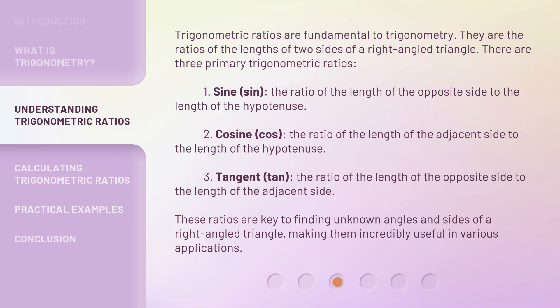1. Sine (sin): the ratio of the length of the opposite side to the length of the hypotenuse. 2. Cosine (cos): the ratio of the length of the adjacent side to the length of the hypotenuse.